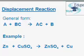We can write it in general form like this: A is reacting with BC and it is producing AC and B.